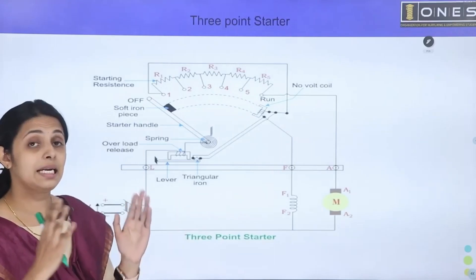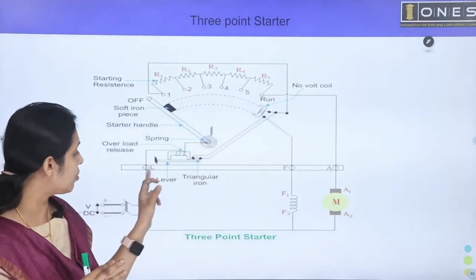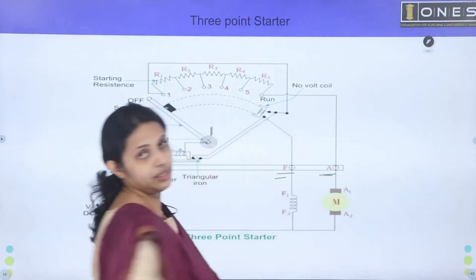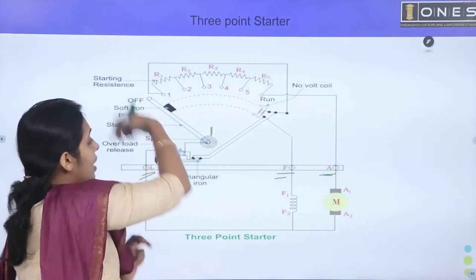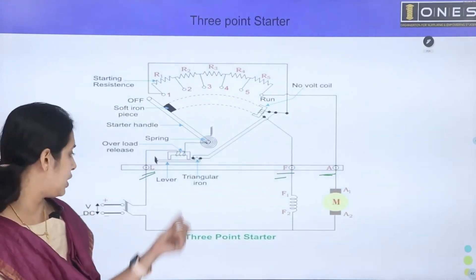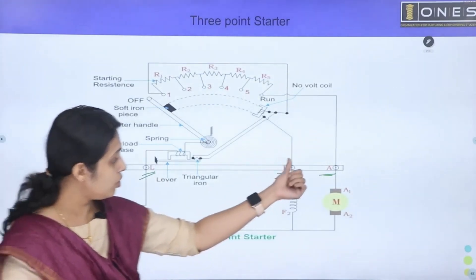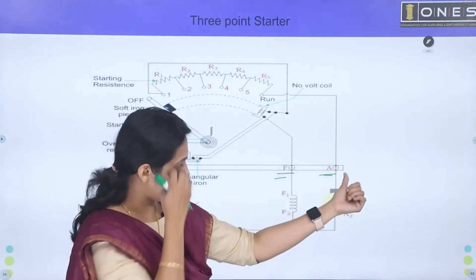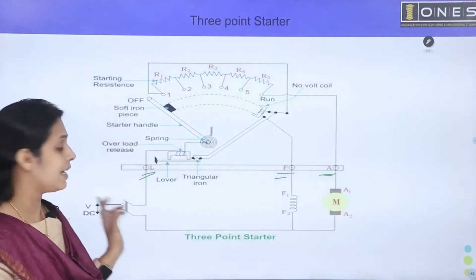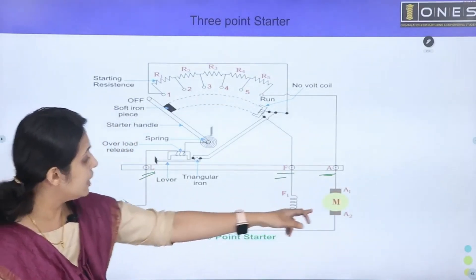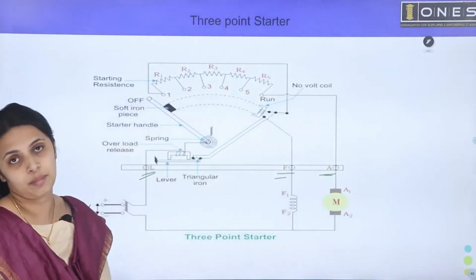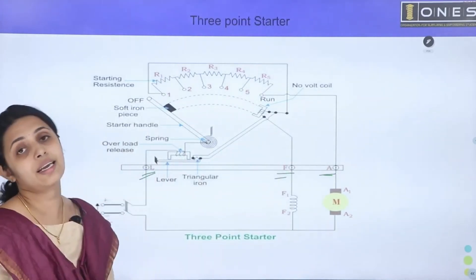The 3-point starter has three terminals: Line Terminal (positive supply), Field Terminal (motor field winding), and Armature Terminal. A series resistance is connected to the armature to limit starting current. The armature current becomes Ia = V / (Ra + external resistance), reducing the initial current significantly.